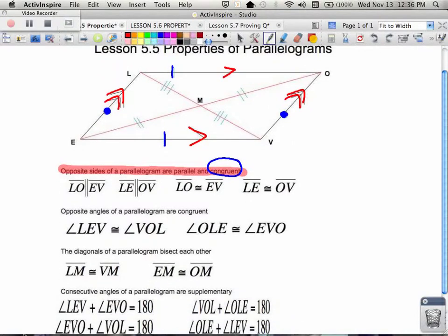The second, or possibly the third property, is the opposite angles of a parallelogram are congruent. If we look at the opposite angles in these parallelograms, we see that angle LEV, which is the bottom left angle, is congruent to angle VOL, the top right angle. So for example, perhaps both of those are 60 degrees.